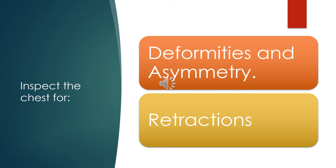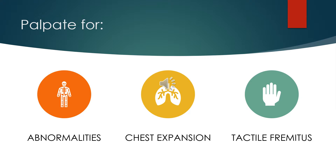We will continue to inspect the chest for deformities and asymmetry. We will look for retractions. We will now begin palpation. Posteriorly, we will feel for abnormalities. We will test for chest expansion, and then we will feel for tactile fremitus.